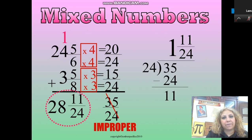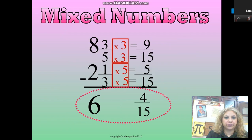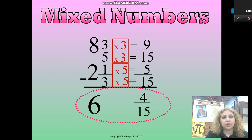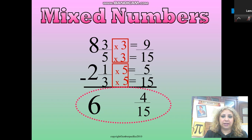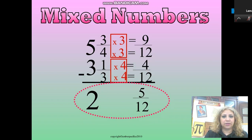Here is another example — you can pause the video and try it on your own, then check the answer after you finish. Now here is an example for subtracting mixed numbers. The same procedure: find the LCD for 5 and 3, which is 15. Then subtract the whole parts: 8 minus 2 is 6. Then subtract the numerators — 9 minus 5 — after finding the equivalent fractions.